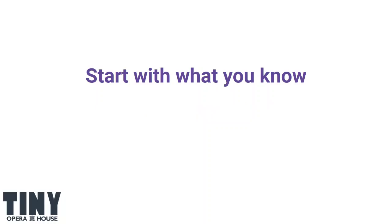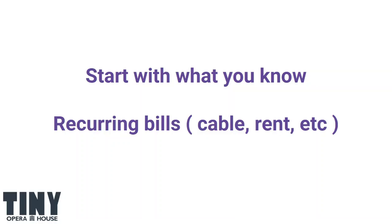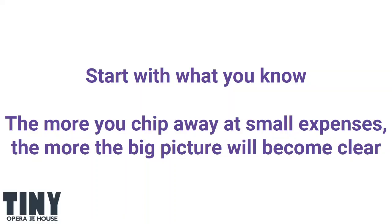There are still a lot of blank cells in that budget even as you split it out. Starting with what you know is key — for any of your organizations, there are things like recurring bills, rent, utility bills. These are great things to start plugging into the budget model. The more you chip away at these smaller pieces, the more it's going to start to aggregate and you're going to see that you are starting to build a picture of your organization as a whole. Always starting with what you know will make it easier as you go along.